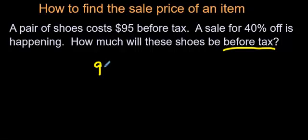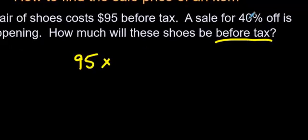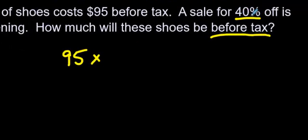So, you've got $95, and apparently there's a sale for 40% off. Just like the other video, you're going to multiply 40% times 95, but change 40% into a decimal. Move the decimal over two places, or divide by 100, and you will come up with 0.40, or just 0.4, either way, it's the same thing.